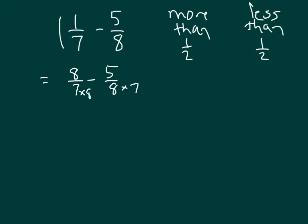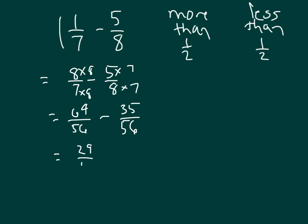We'll multiply by the other denominator — that looks like the easiest approach in this case. Eight times eight is sixty-four, and seven times eight is fifty-six. So one-and-one-seventh equals sixty-four fifty-sixths. And I'm subtracting thirty-five fifty-sixths from it. Sixty-four minus thirty-four would be thirty, but since I'm subtracting thirty-five, the answer is twenty-nine, or twenty-nine fifty-sixths. Is that more than a half or less than a half?